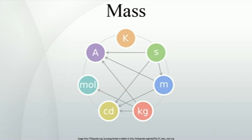Mass. In physics, mass is a property of a physical body which determines the body's resistance to being accelerated by a force and the strength of its mutual gravitational attraction with other bodies.